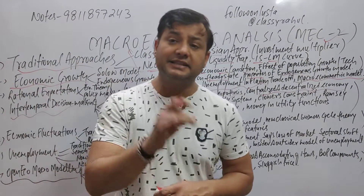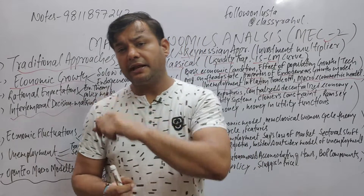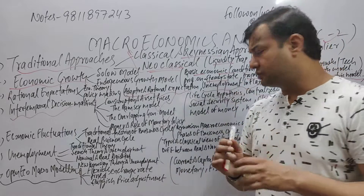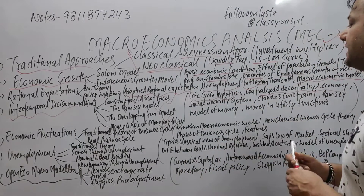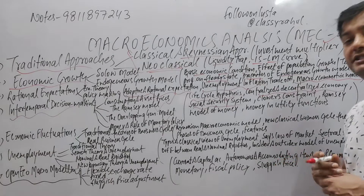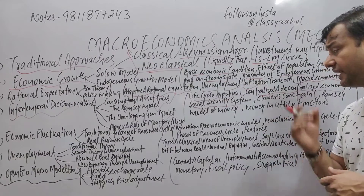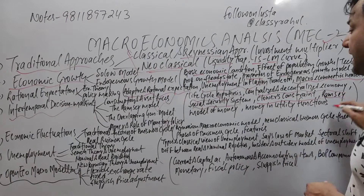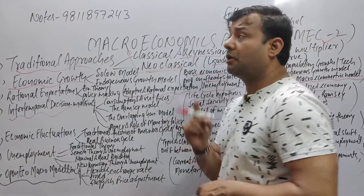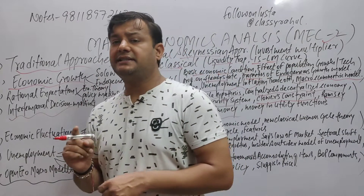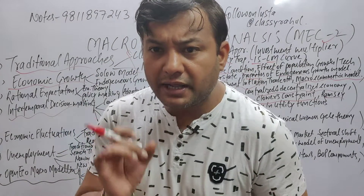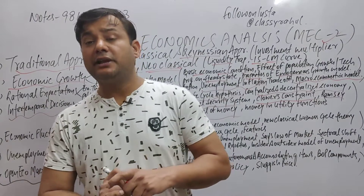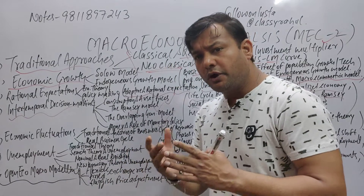Centralized and decentralized economy models — you have studied these concepts thoroughly in graduation as well, so review them fully. Then, next: social security system — what is the social security system, what are its benefits, and how it works. Then we have the Cass-Koopmans and Ramsey model of money — keep this on tip. Write it down; the more you write, the more command you will have on this topic.